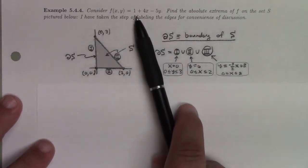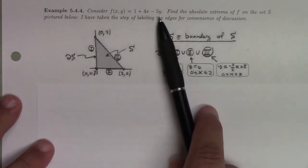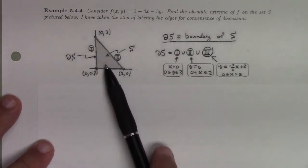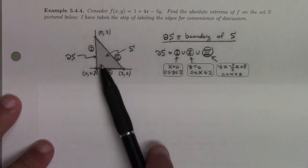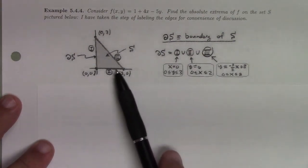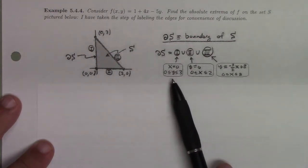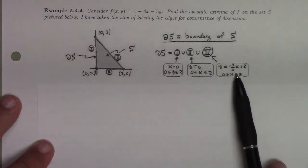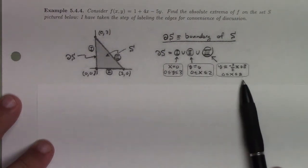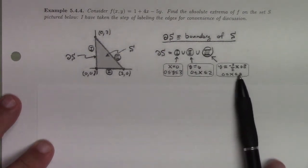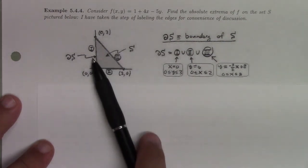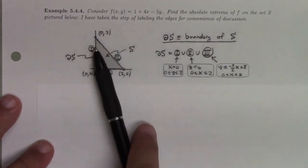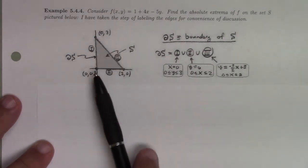Here is a function, 1 plus 4x minus 5y. This is a linear function. Here this is a triangle, a triangular region. I labeled that 1, 2, and 3. The boundary of S has these three line segments given by x equal to 0, y between 0 and 3; or y equal to 0, x between 0 and 2; or this line, y equals minus 3 halves x plus 3 for 0 less than x less than 2. These box things tell me how to parametrize these line segments, and then I can just plug these parametrizations into that formula respectively to figure out the maximum or minimum of this function on each of the line segments.